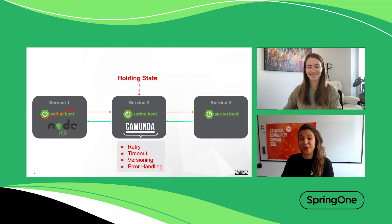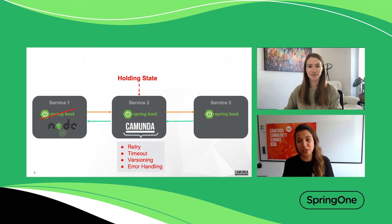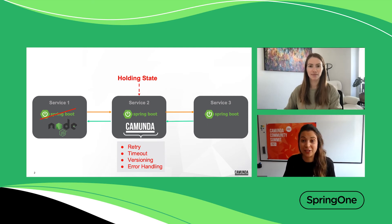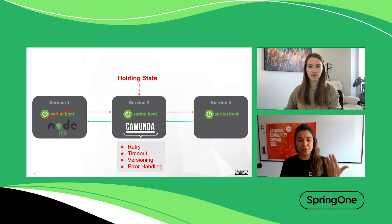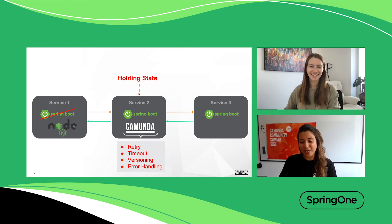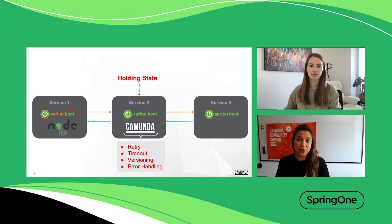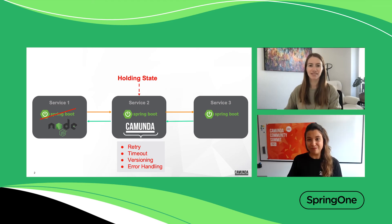One really common use case is to combine service orchestration with human workflow tasks. So you have a process that incorporates human interaction, user interaction, and service orchestration, and normally you have a high throughput where a lot of process instances are starting. As an example, we have a customer that is a German clothes retailer called Zalando, and they use Camunda for the ordering process. When you press the order button, Camunda is triggered and helps get your order to your door.